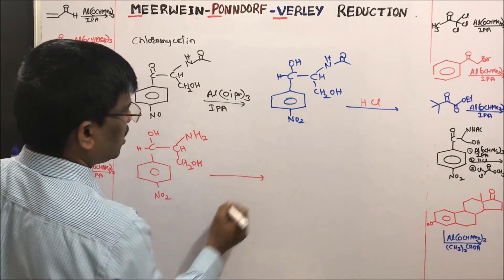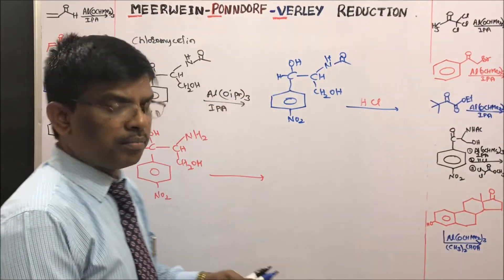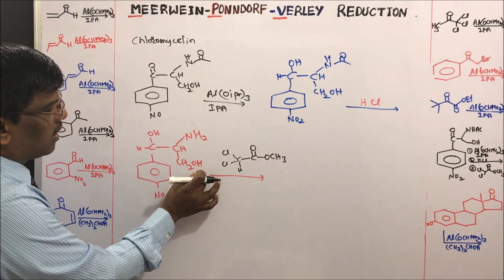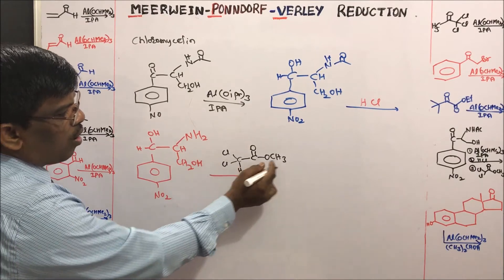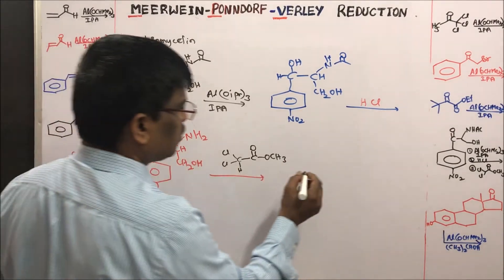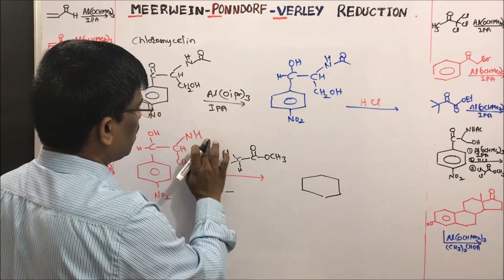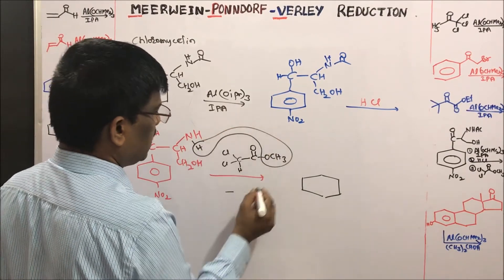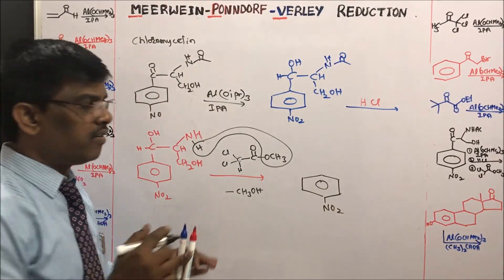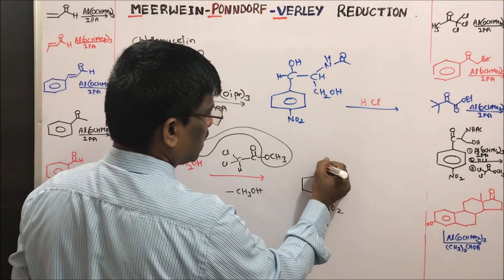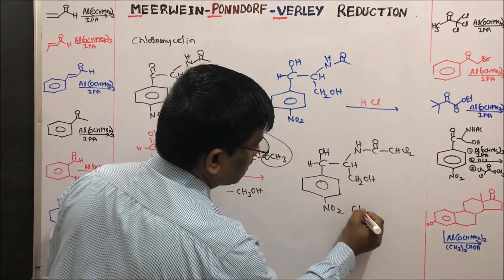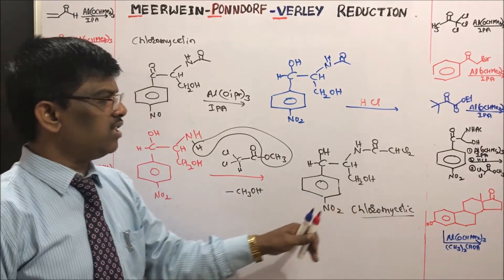The acetamide remains intact. Upon HCl hydrolysis, deacetylation occurs giving NH₂. This amine is then treated with dichloromethyl acetate — the NH₂ reacts with the ester component, losing methanol and forming a dichloroacetamide. This gives the product known as chloromycetin, which is used as a drug.